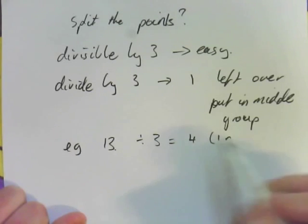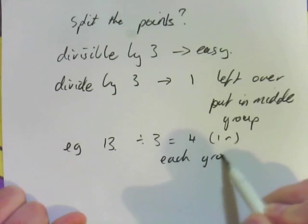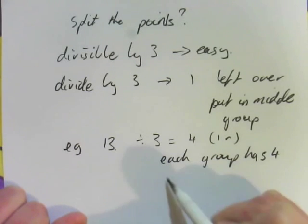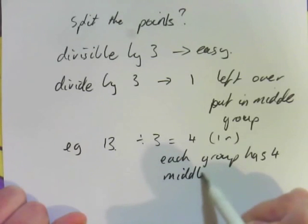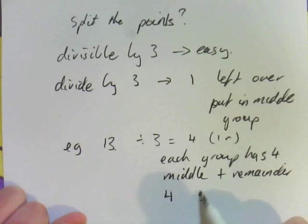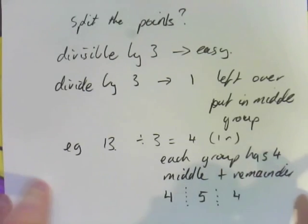So each group has 4, and the middle group, you add the remainder. So it would be 4, 5 in the middle group, and 4 in the other end group. So that's if you have 1 left over.